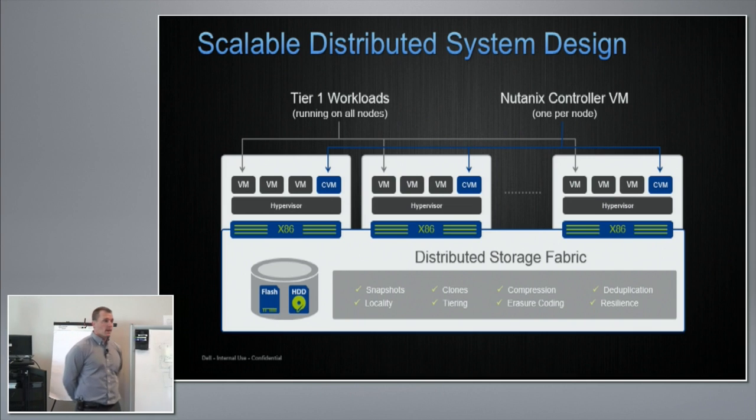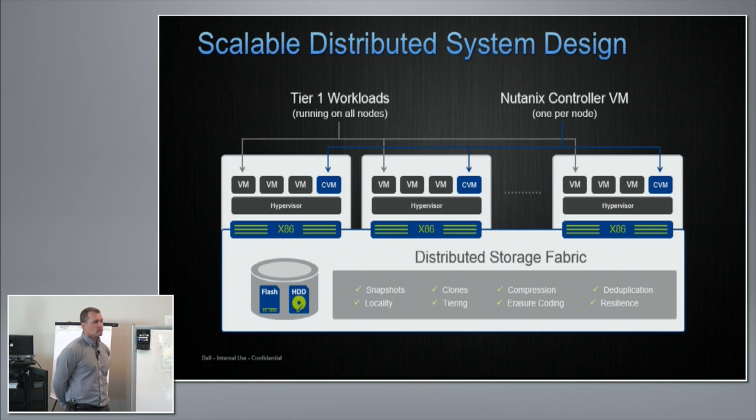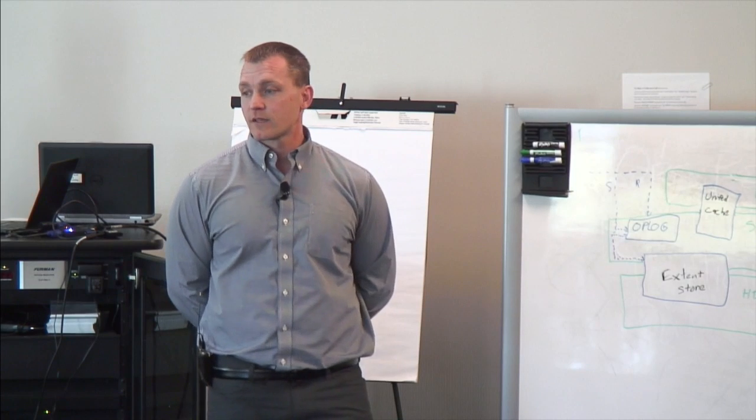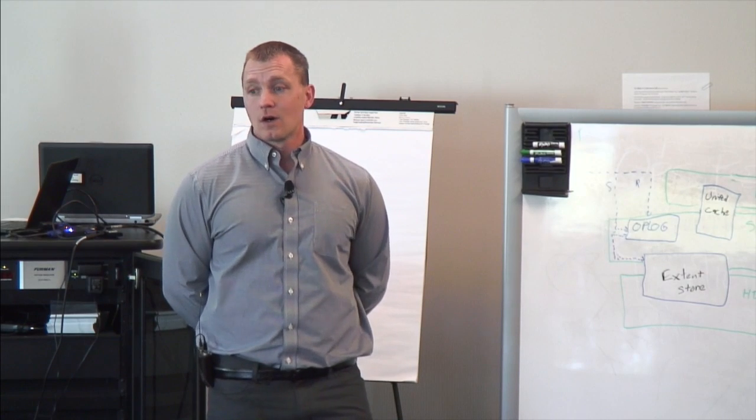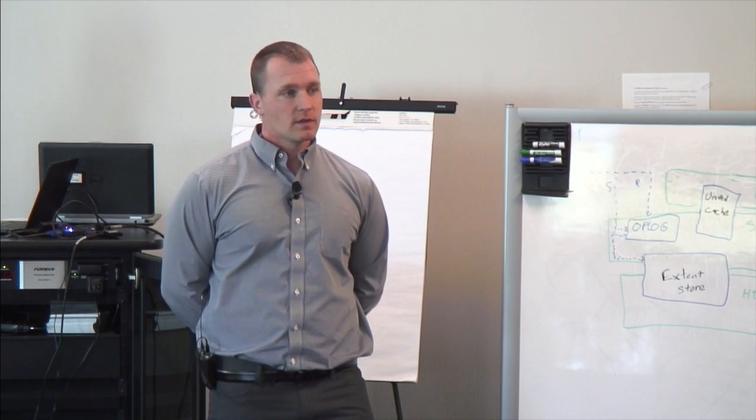Question: the diagram shows a hypervisor on each node — presumably one hypervisor type per node? Clusters today are all the same hypervisor type. So where the VMs are running today, they all have to be the same hypervisor type — all ESXi, all Hyper-V, and so on — at the cluster level, not just the node level.